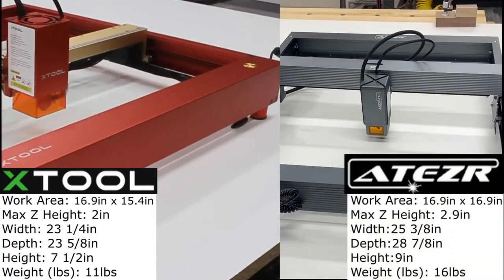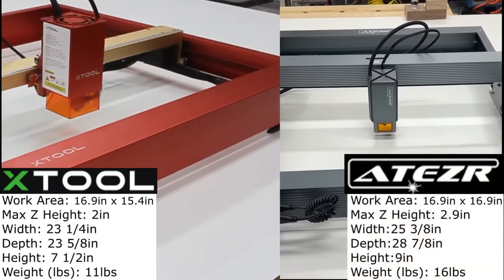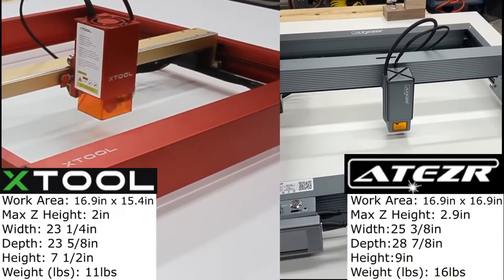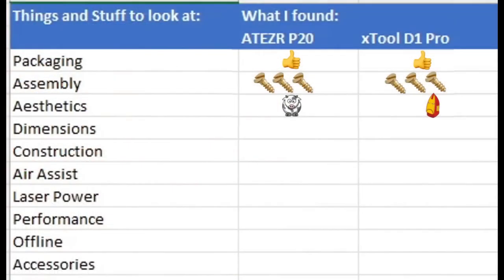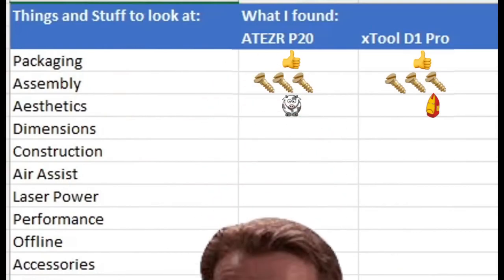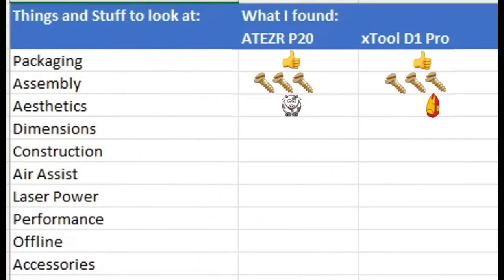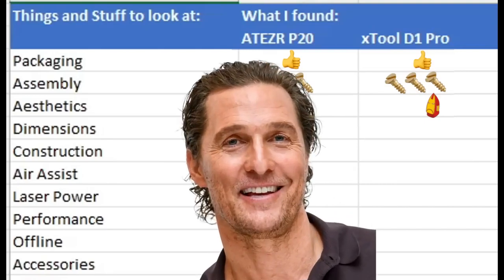So how do they compare to one another? Well, the Ateser is just bigger in every dimension measured. It's sort of like the Arnold Schwarzenegger of the two. And the X tool is smaller, sleeker. It's like the Matthew McConaughey. Alright, alright, alright.